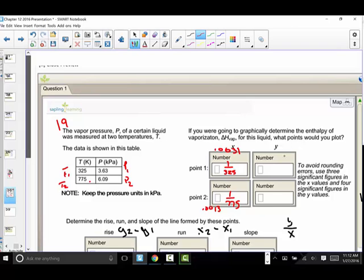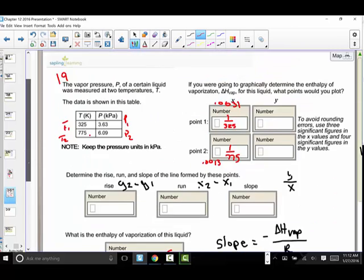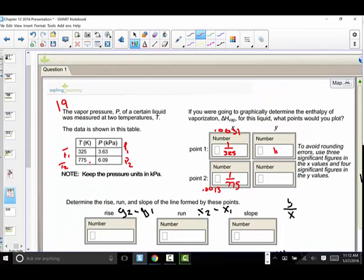How about the y? Well, remember on the graph, the y is the natural log of P. So here what we need to do is to go back and take the natural log of the first pressure, 3.63, and for the natural log of 6.09. So on your calculator, find ln. Not LOG, but ln. That's a natural log, 3.63. And here I'm finding 1.289.